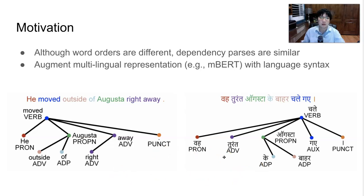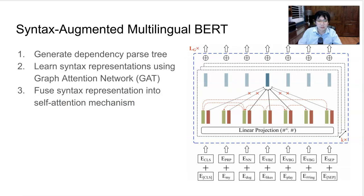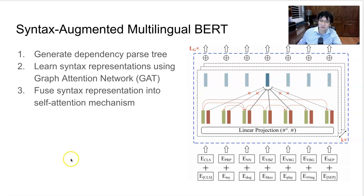We propose to use a graph attention network to encode the global information of a parse tree to generate a syntax representation, then fuse this syntax representation into the self-attention layer of the multilingual text encoder. To generate this syntax representation, given words and their part-of-speech tags as input, we first fuse information of each word with its neighbors in the parse tree to generate the representation of the next layer. We do this for multiple rounds to generate the representation of the entire parse tree.